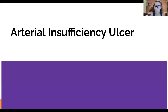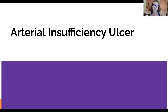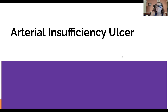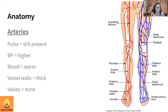Today we're going over arterial insufficiency ulcers. This will show up on the exam — whether it's arterial insufficiency ulcers, venous insufficiency ulcers, or both. Nine times out of ten, if they're asking a question about ulcers, they're going to ask something where we have to compare characteristics. Arterial insufficiency goes along with peripheral vascular disease — pay attention, this will show up on the exam.